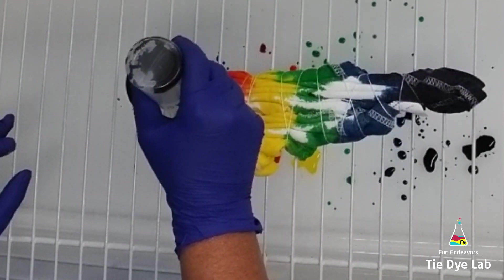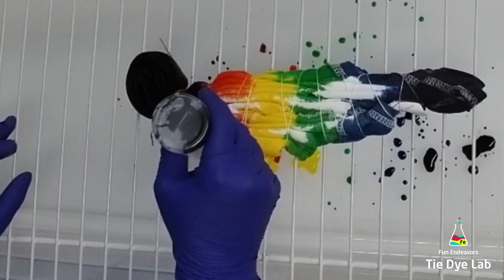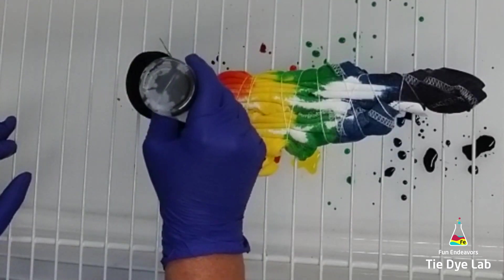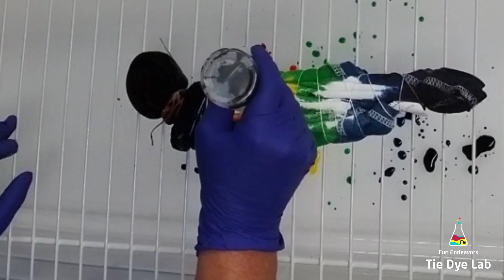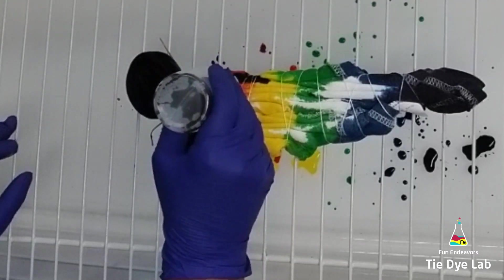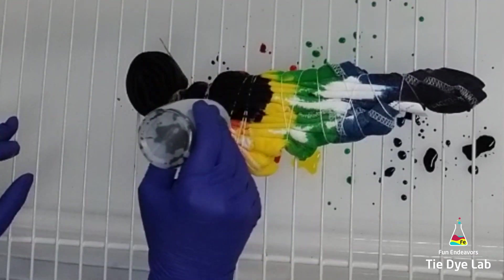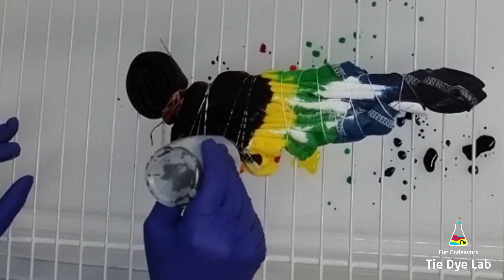And I'm going to put a light coat of black all over the rest of the back of the shirt. I don't want to oversaturate this with the black though, because I don't want the black to go all the way through the front of the shirt and overtake my rainbow colors that I put on the front.